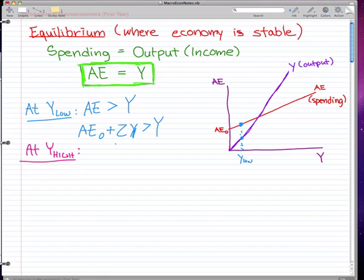At Y_high, it's the exact opposite. At Y_high, AE is less than Y, and similarly AE_0 plus ZY is also less than Y. This happens when your output or income is greater than your spending. This is Y_high.